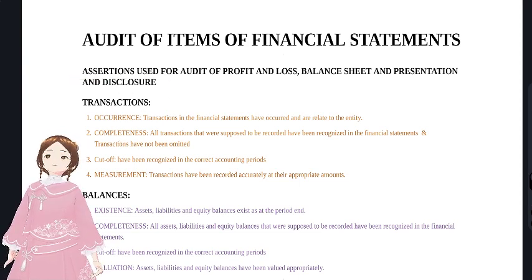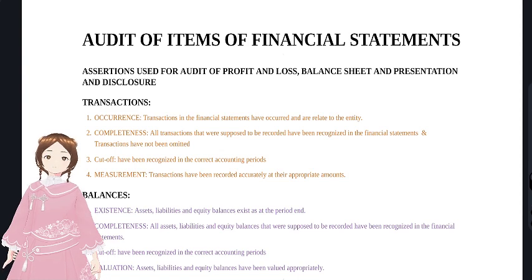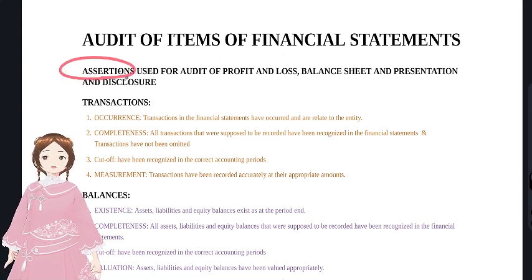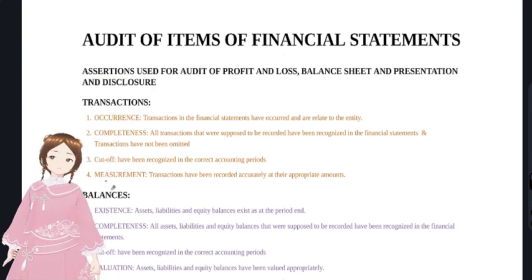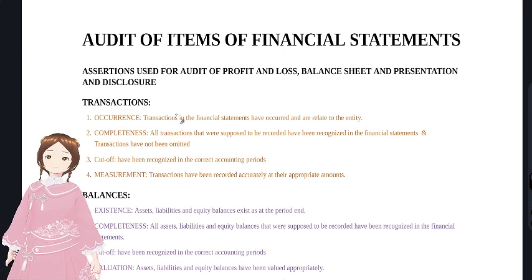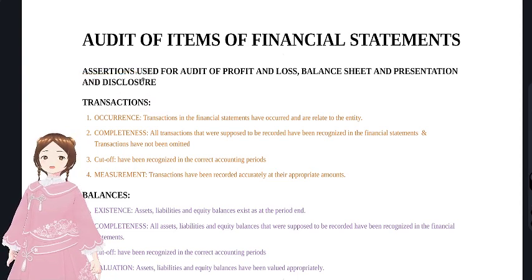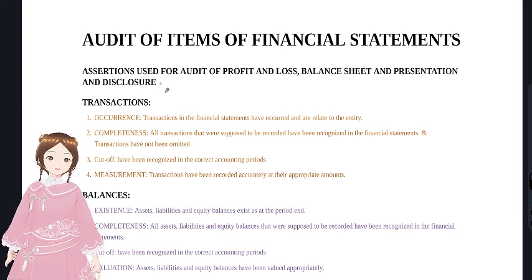For every assertion, we will check through audit procedures whether management has claimed a particular quality for a transaction or account balance. Assertions include completeness, accuracy, occurrence, measurement, and cutoff - all qualities that management claims for each item in the P&L, balance sheet, or disclosures.